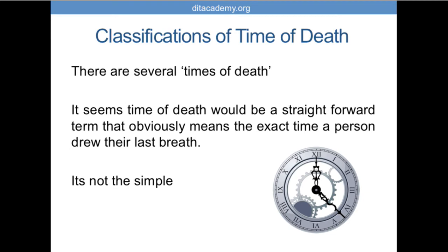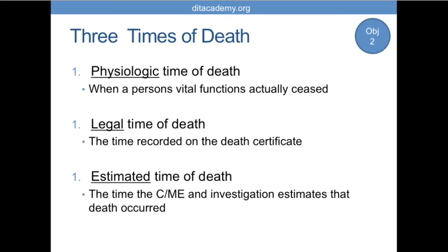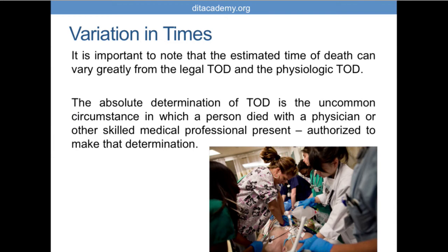There are three classifications when it comes to time of death. It seems straightforward, but it's not that simple. First is physiological time of death — the time a person's vital functions actually ceased, when their heart and lungs stopped. Second is legal time of death — the time recorded on a death certificate. Third is estimated time of death — the time the coroner or investigator estimates the death occurred. These estimated times can vary quite a bit.